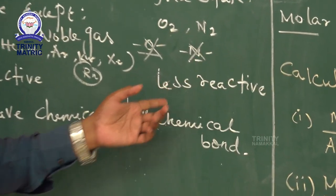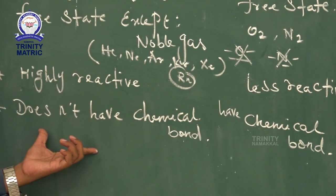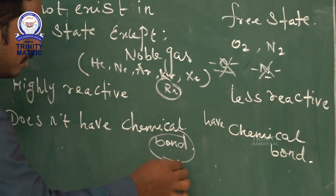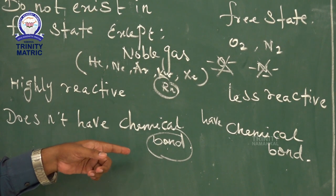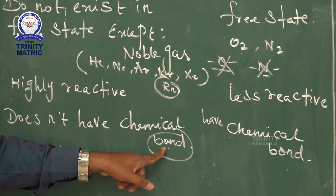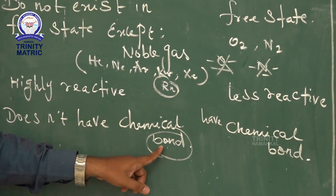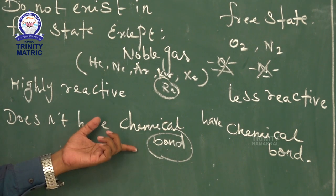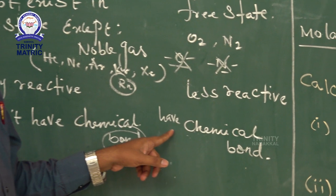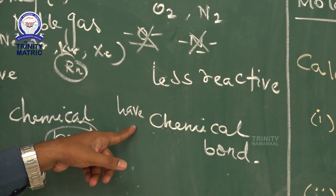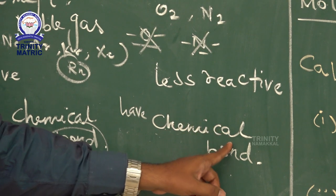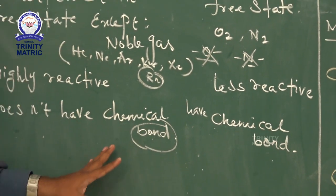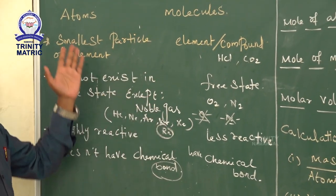The fourth difference: atoms do not have any chemical bond. A bond is a linkage between two or more atoms. Since an atom is a single unit, it does not have any chemical bond. A molecule, however, is made up of a combination of atoms held together by bonds. So molecules have chemical bonds, but atoms do not.